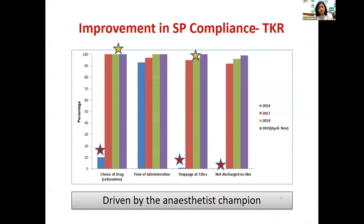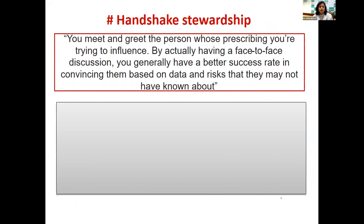In our experience, we had a major problem with surgical prophylaxis compliance in orthopedics and CABG services. Improvement in both units was driven by their own anesthesiologists in collaboration with the AMS team. Compliance, which was less than 20% for choice, time, and duration, is now more than 90%. The champion model is a very good idea for any initiative.